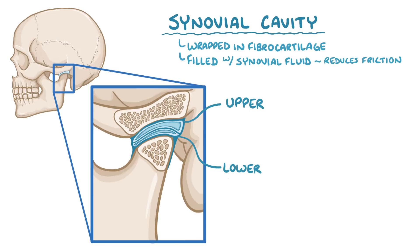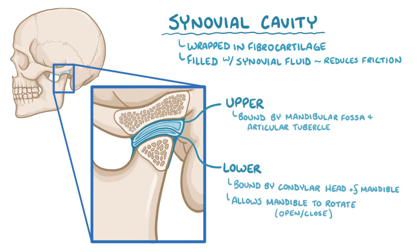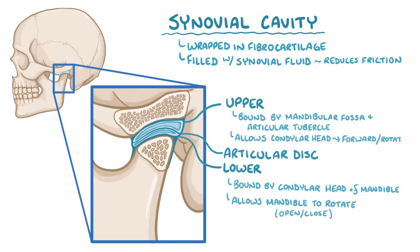The lower compartment is bound inferiorly by the condylar head of the mandible, and it allows the mandible to rotate, which lets the mouth open and close. The upper compartment is bound superiorly by two regions of the temporal bone: the mandibular fossa in the middle and back, and the articular tubercle in the front. Separating these two compartments is the articular disc, and the upper compartment allows the condylar head to move forward and rotate.